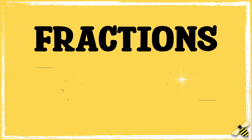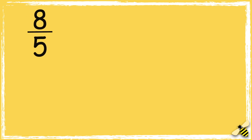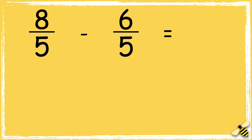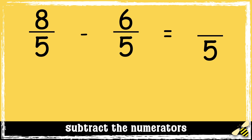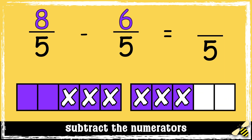In this video we're going to be subtracting improper fractions. Here is a calculation: eight fifths take away six fifths. Remember, when we subtract fractions, as long as the denominators are the same, we only subtract the numerators. So eight take away six equals two.